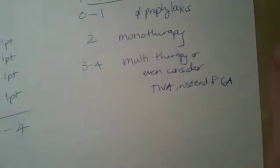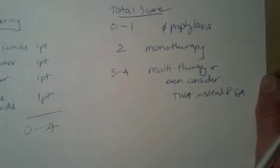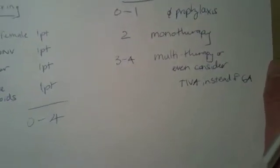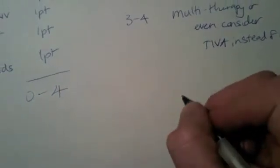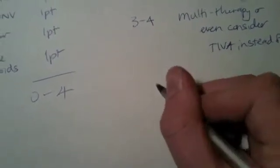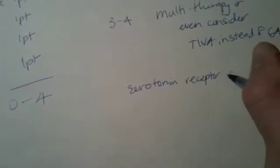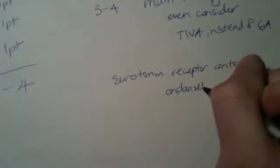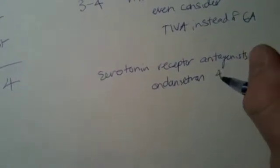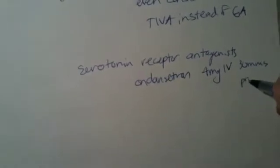The volatile gas, whether it be desflurane, sevoflurane, or even isoflurane, can be very powerful nausea inducers as well. When we talk monotherapy or multiple therapy, the most common agents—probably the most common agent is a serotonin receptor antagonist called ondansetron. That's usually given in a four milligrams IV dose about a half hour prior to end of surgery.